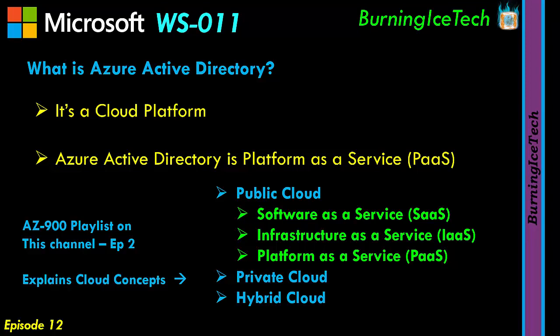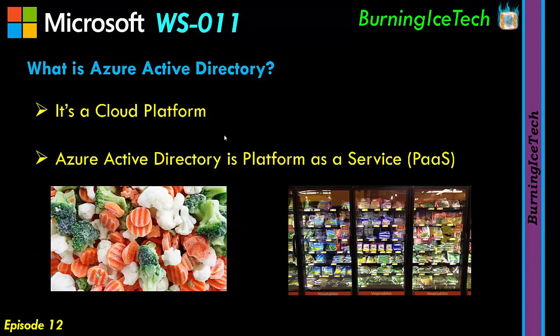You can imagine yourself walking into a grocery store and buying frozen veggies in a bag — pre-mixed, pre-sliced, pre-diced, pre-peeled. You just buy it, take it home, and maybe throw it in a pot of water and cook it. You're going to do some work, but it's minimal. The supermarket, whoever made that bag of veggies, did almost all the work for you. That is actually an example of Platform as a Service.